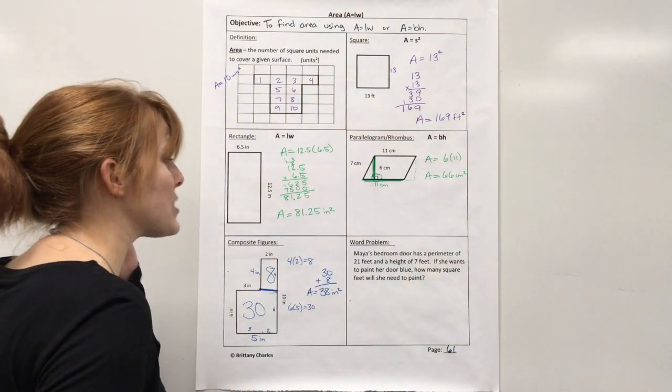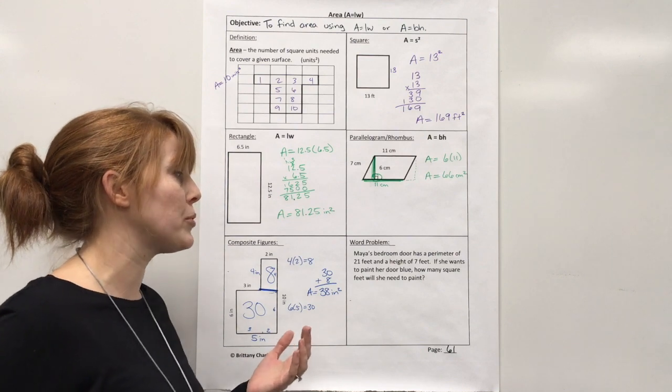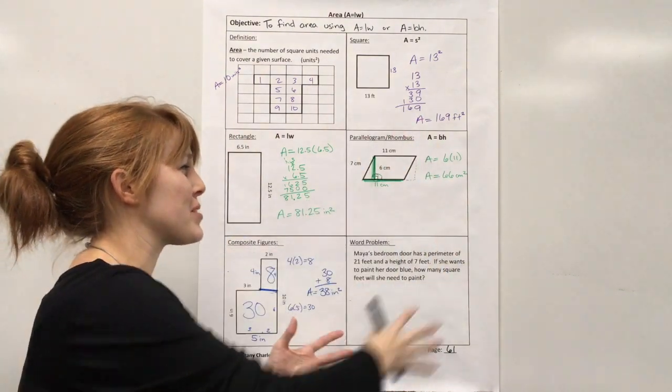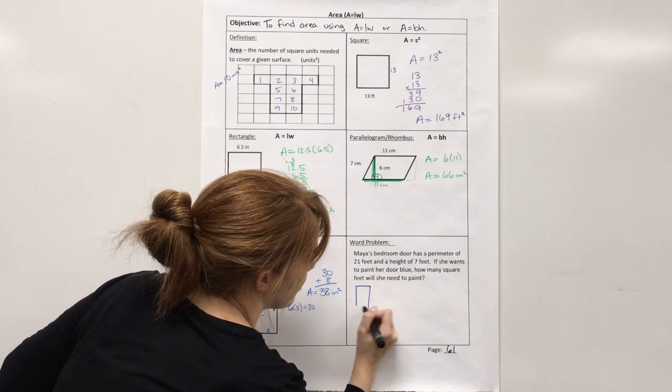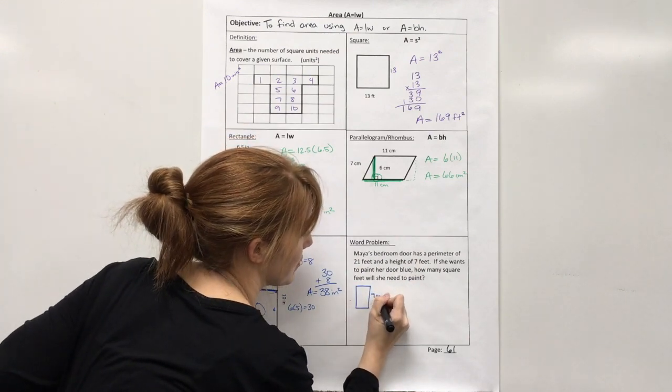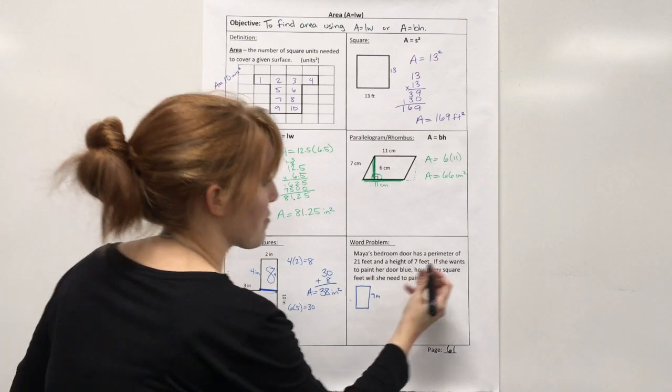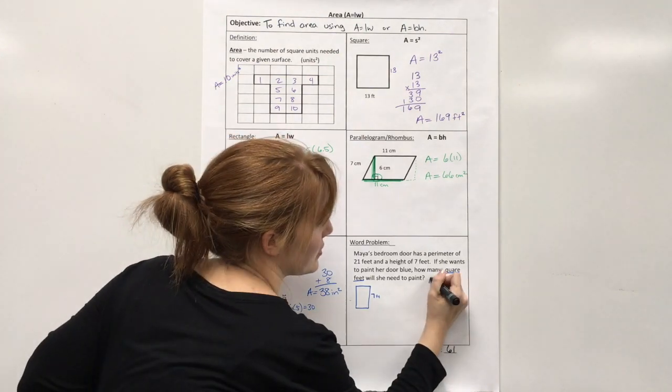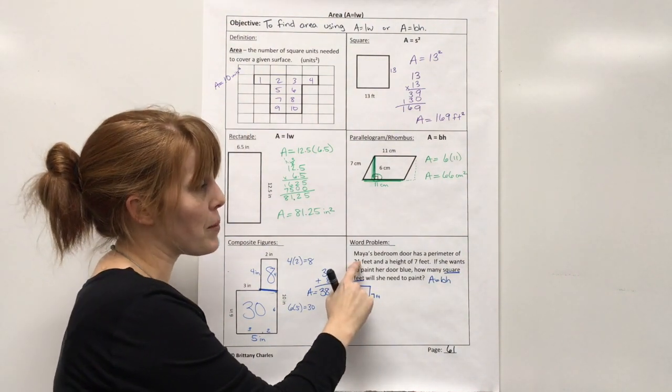And last one, we have a word problem. Maya's bedroom door has a perimeter of 21 feet and a height of 7 feet. If she wants to paint her door blue, how many square feet will she need to paint? Well, the first thing I would always recommend is try drawing a picture. Especially with problems that involve shapes and geometry. You want to draw a picture. So, here is her door. And it tells us the height is 7 feet. So, I know this is 7 feet. And it tells me the perimeter, which means all the way around, is 21 feet. Well, I know that I need to find area because it asks me for square feet. Well, I know the formula for area is base times height. So, I need to find what this base or this width is. And I have to use this perimeter given to find that.